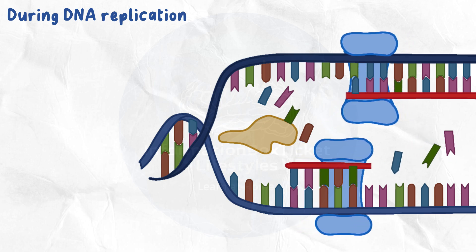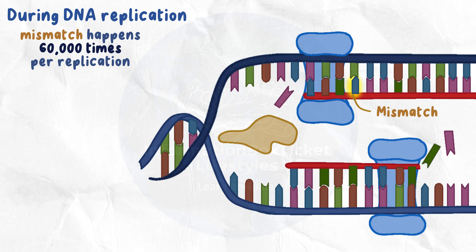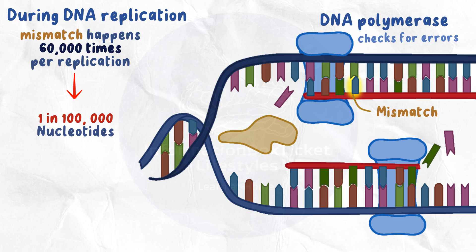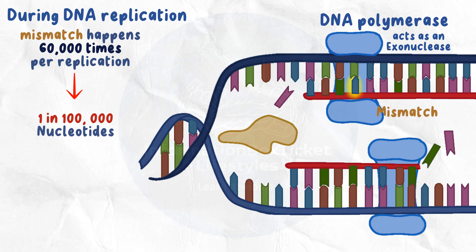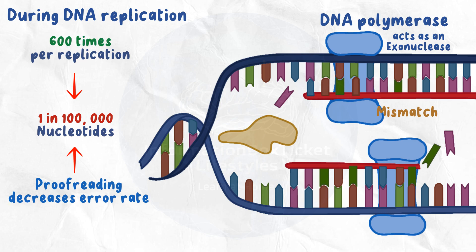During replication, DNA polymerase can occasionally insert the incorrect nucleotide, such as pairing adenine with cytosine instead of thymine. This is known as a mismatch, and it occurs around 60,000 times every replication, or one out of every 100,000 nucleotides. DNA polymerase can proofread by checking for faults and ensuring the correct nucleotide was used — similar to proofreading an essay. If it detects a mismatch, it functions as an exonuclease, removing the incorrect nucleotide and replacing it with the correct one. Proofreading decreases the mistake rate to around 600 times per replication, or one out of every 10 million nucleotides.